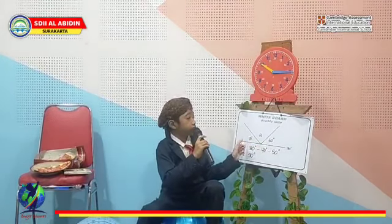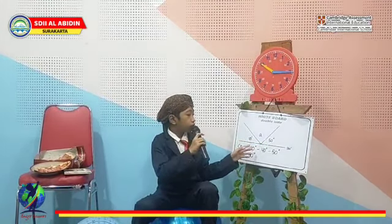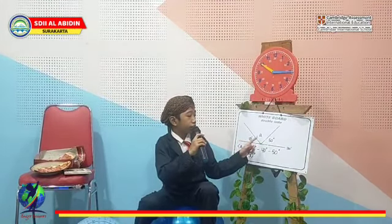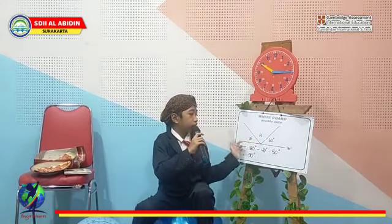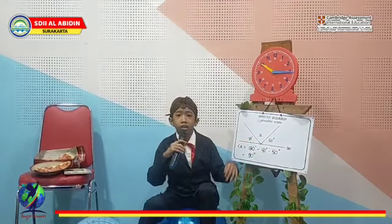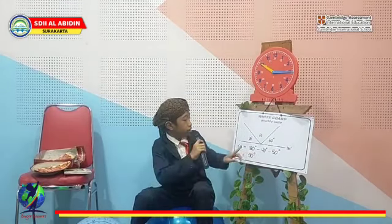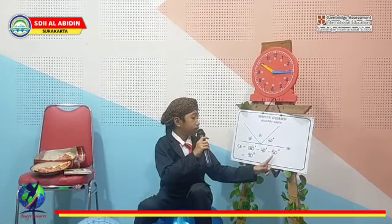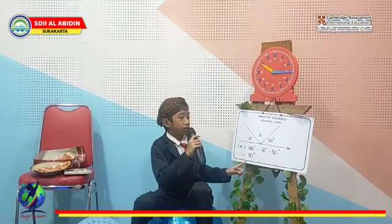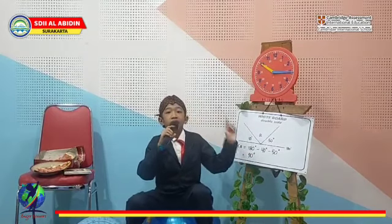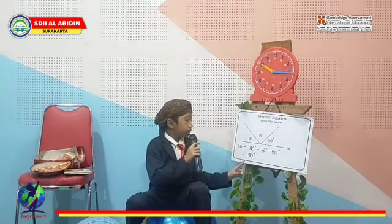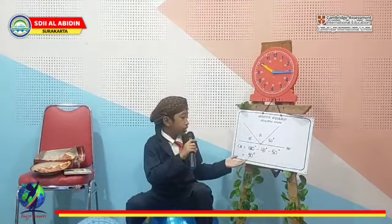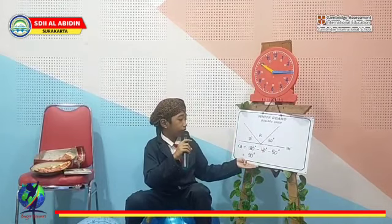This angle is 50 degrees and this one is 40 degrees. We're looking for the remaining angle. A straight angle is 180 degrees. So we subtract 180 minus 40 minus 50 degrees. The answer is 90 degrees, which is a right angle.